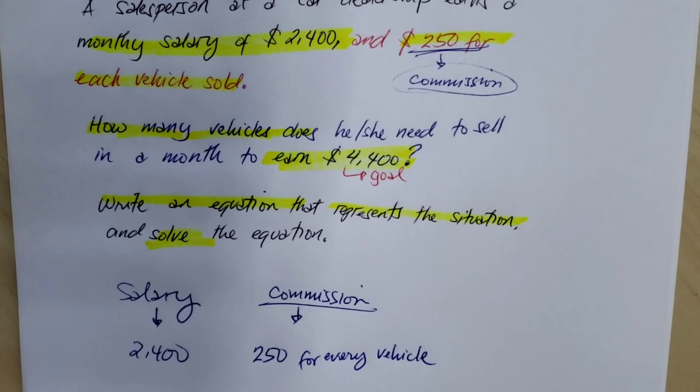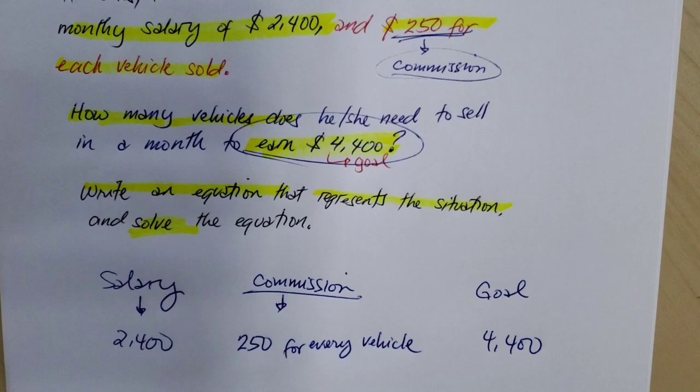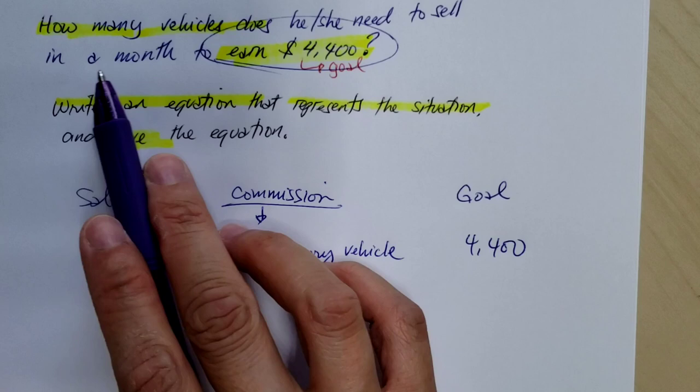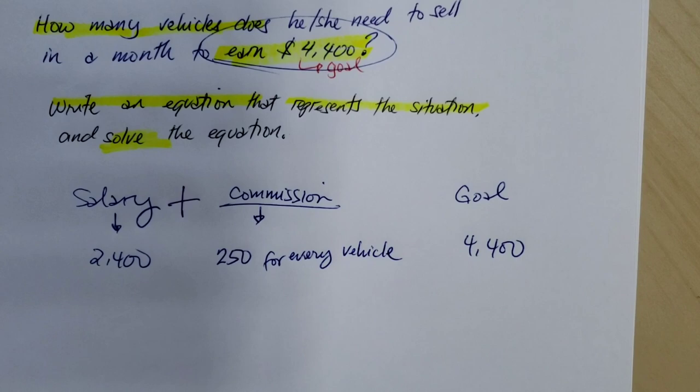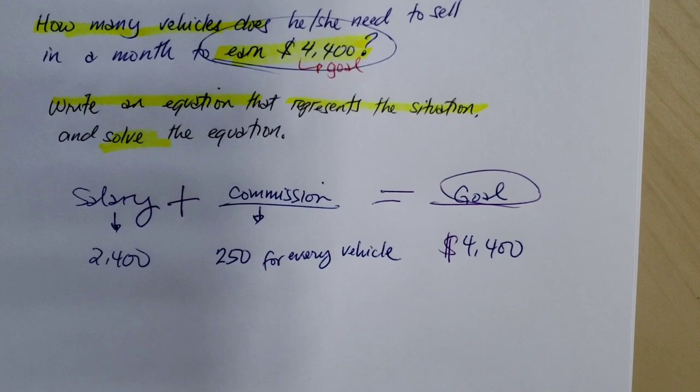We also know that his goal is to earn $4,400. So how many vehicles does he need to sell in a month to earn this much? What do we do with the salary and the commission? We need to add them up so that should give the salesperson's goal of $4,400.